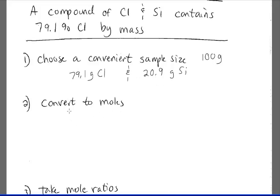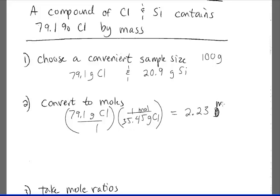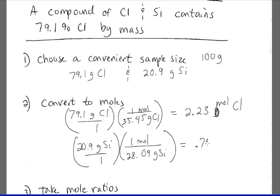We take those two and we convert them to moles. First for chlorine, 79.1 grams of chlorine, use the molar mass, and we find we have 2.23 moles of chlorine. And then for the silicon, 20.9 grams of silicon, convert it to moles using its molar mass, 28.09 grams of silicon, and we find that we have 0.744 moles of silicon.